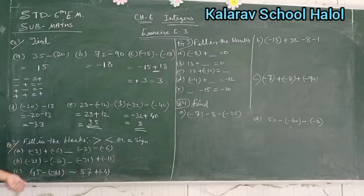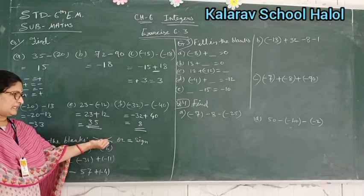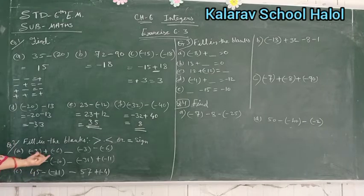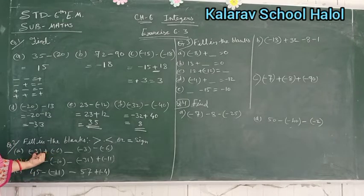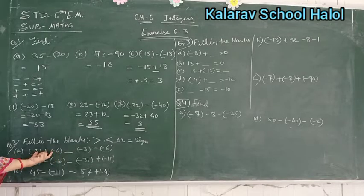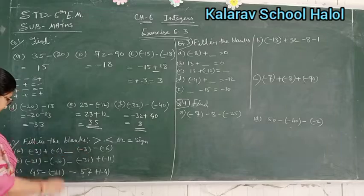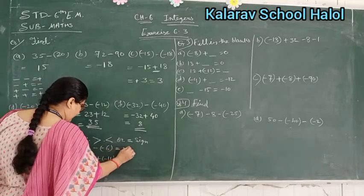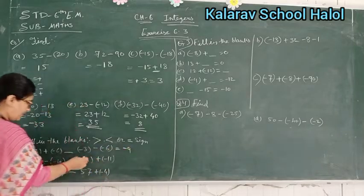Question number 2: fill in the blanks with less than, greater than, or equal signs. First, minus 3 plus minus minus gives minus 9. And minus 3 minus minus gives plus 6, so minus 3 plus 6 gives answer 3. So here we have positive 3 and negative 9.